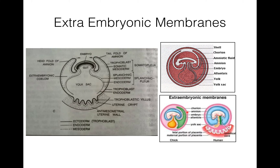This type of allantoic placenta is reduced in human beings. Fourth is chorion — it is the outermost fold of somatopleure, meaning inner ectoderm and outer mesoderm. In reptiles, birds, and prototheria, the combination of chorion and allantois — allantoic chorion — acts as an extra embryonic lung and helps in the exchange of gases. So this is about extra embryonic membranes.